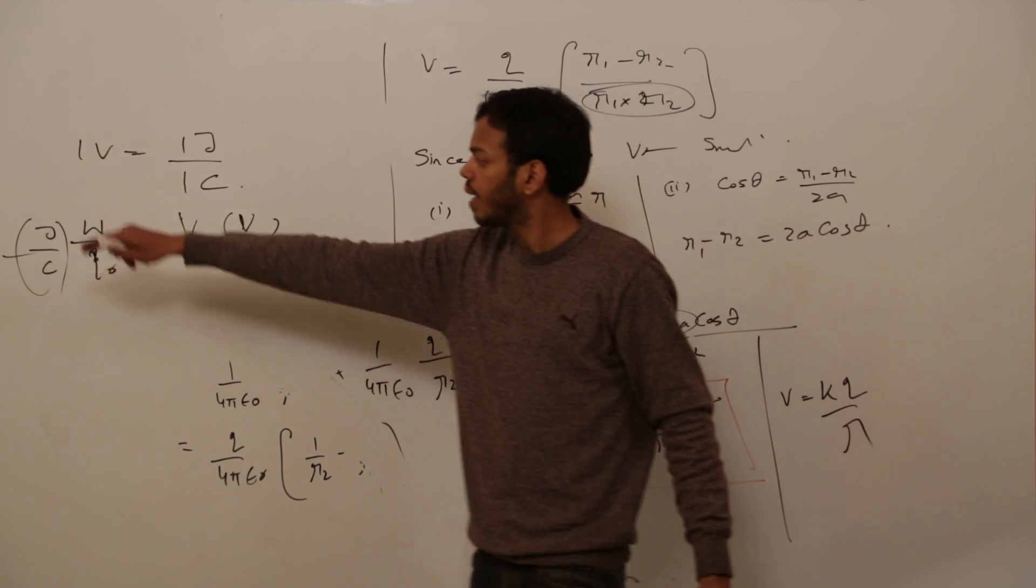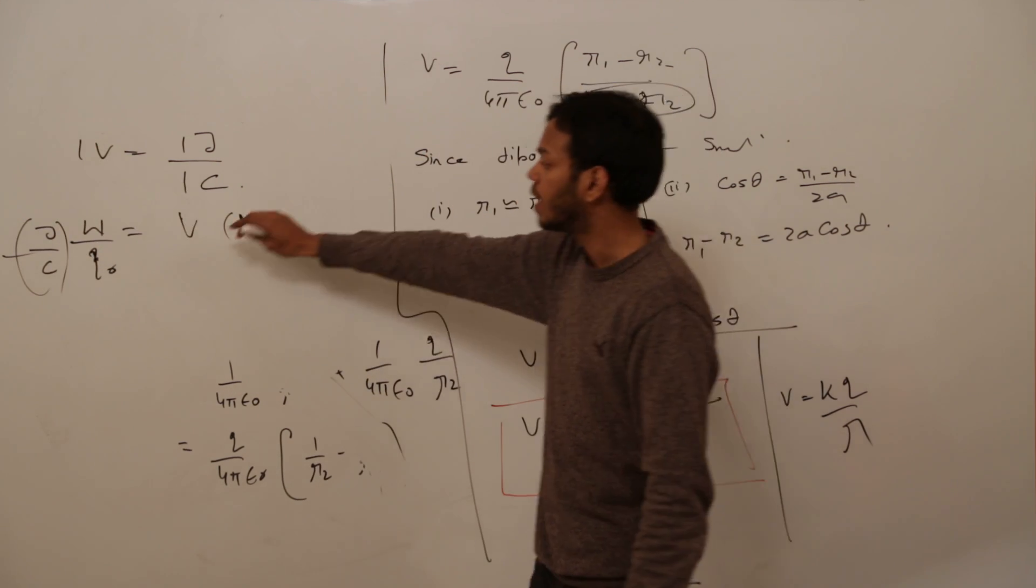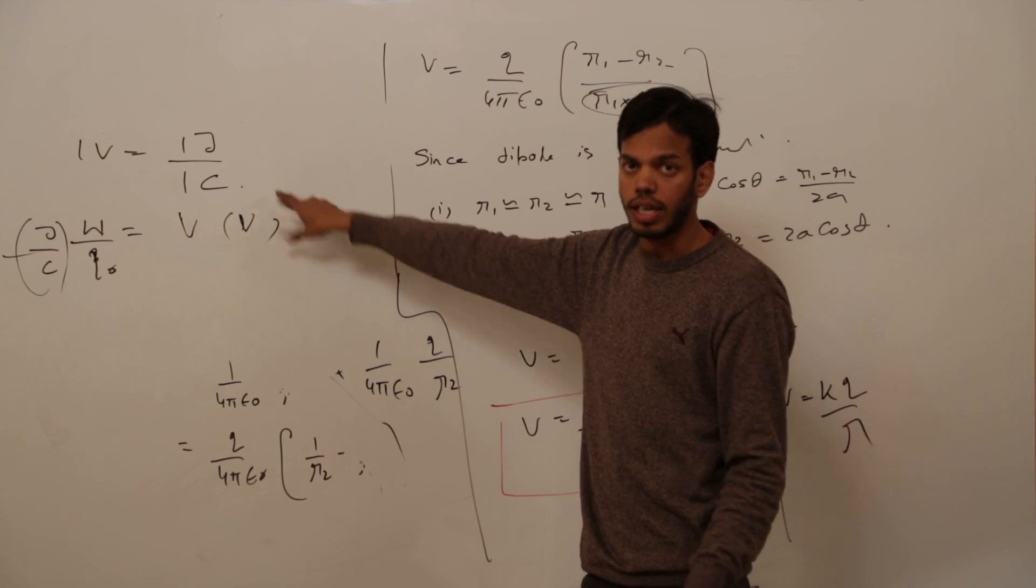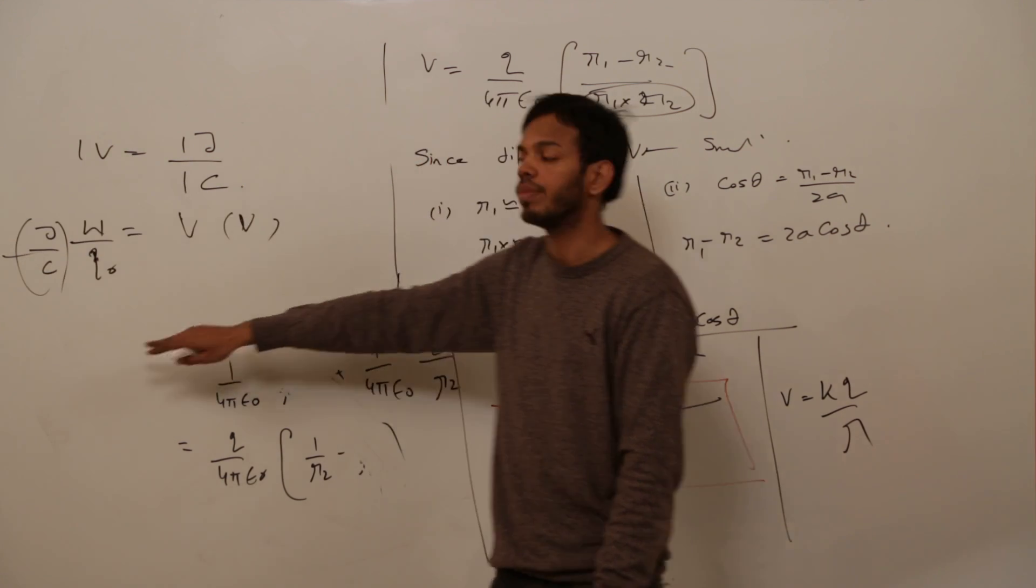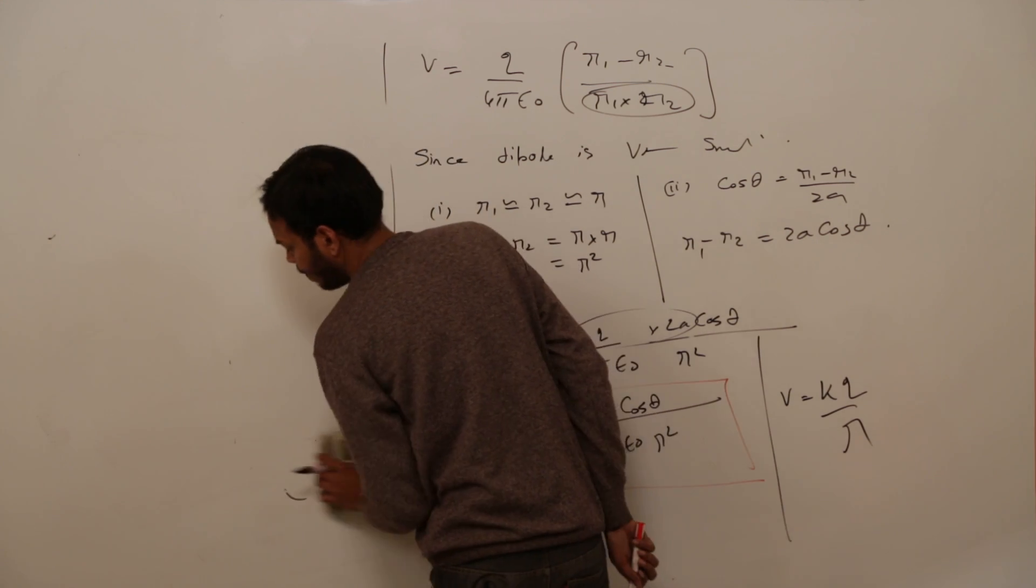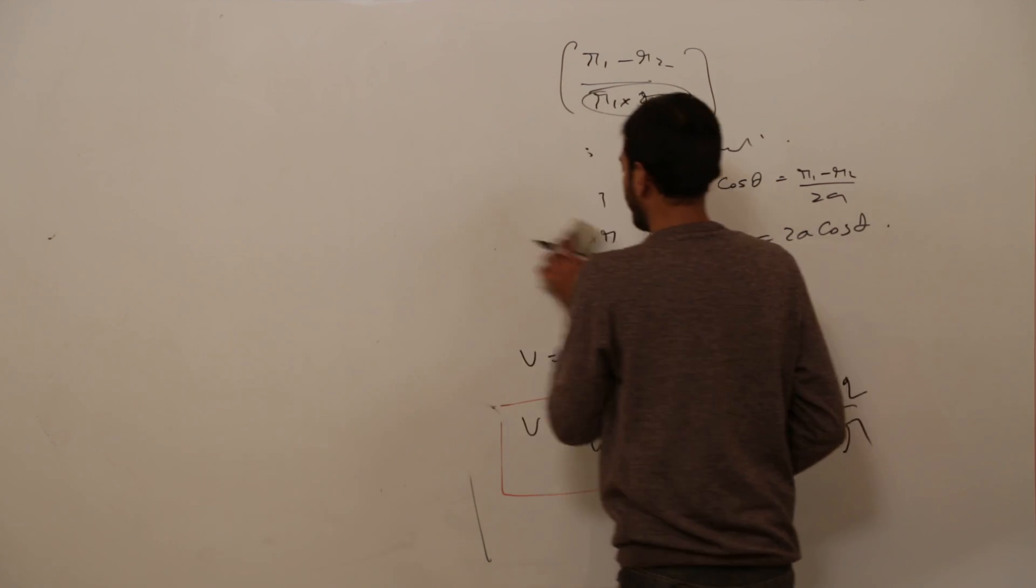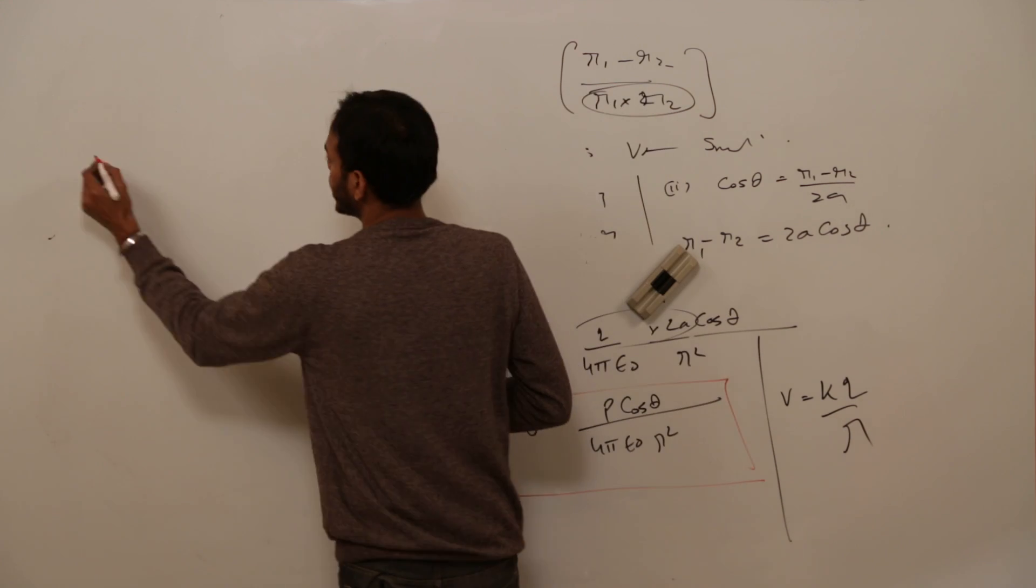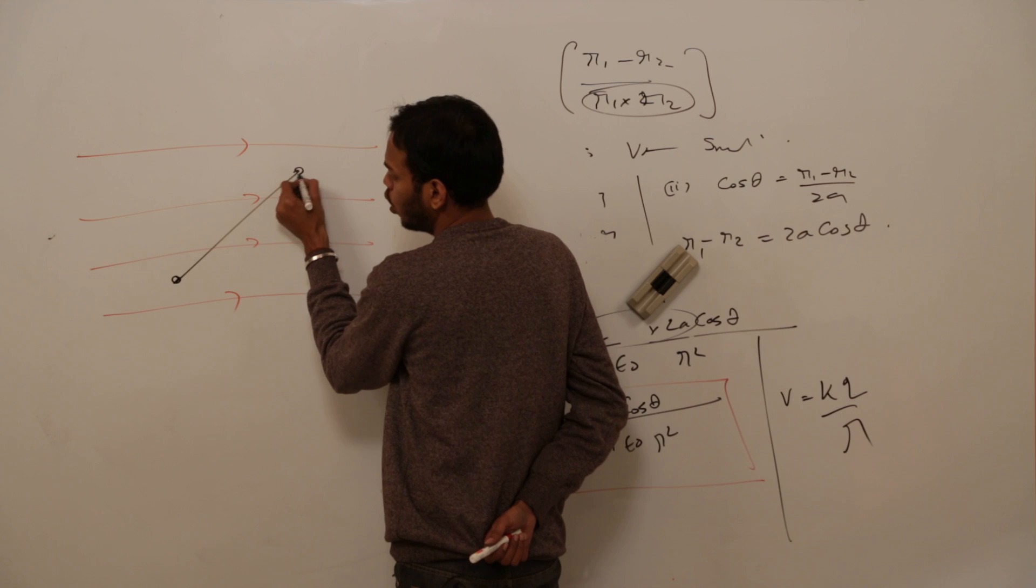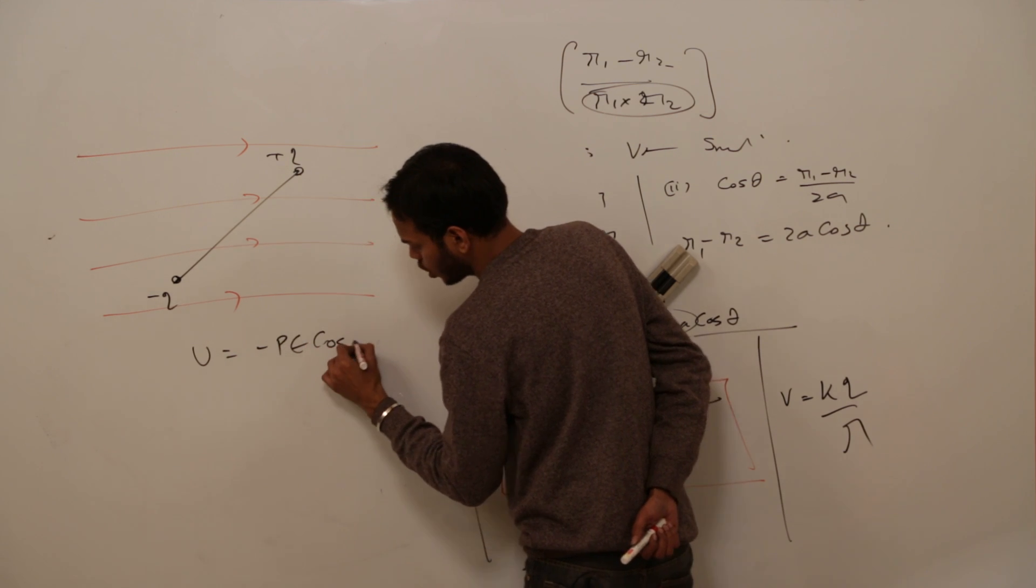Define one volt. When one coulomb of charge is moved so that work done is one joules then the potential is said to be one volt. Or in other way around, when one joule of work is done in moving a charge of one coulomb then potential is said to be one volts. Last point. What is the value of electric potential energy saved in rotating a dipole from theta one to theta two? The formula is minus PE cos of theta.